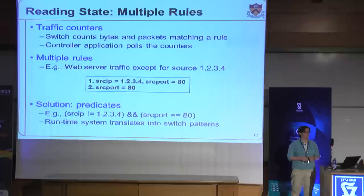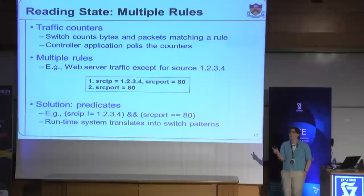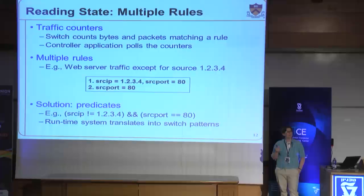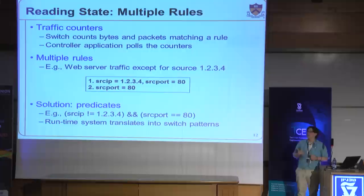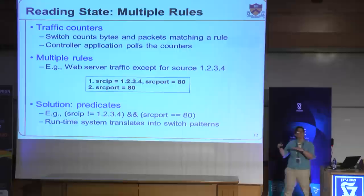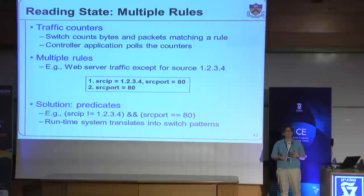Starting with reading of network state — one form is looking at traffic counters. These rules in OpenFlow have byte and packet counters and can tell you quite a bit about what's going on. But if you want to understand that traffic, you may have to have more than one rule to represent all the traffic you want to measure. For example, to look at web server traffic except traffic from a particular source IP address, you might have to install two rules and use priorities to disambiguate them, getting one counter for that source IP and another for all remaining traffic. This gets progressively more complicated as you want to slice and dice traffic in more complex ways.